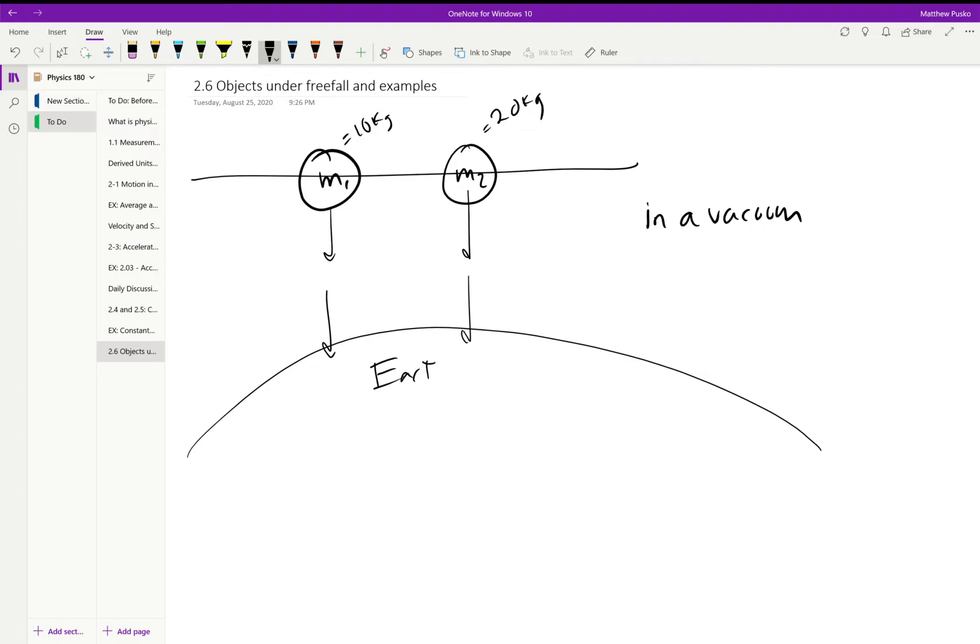On the surface of Earth, this value is what we call g and it has a magnitude of 9.81 meters per second squared and it points downwards towards Earth.